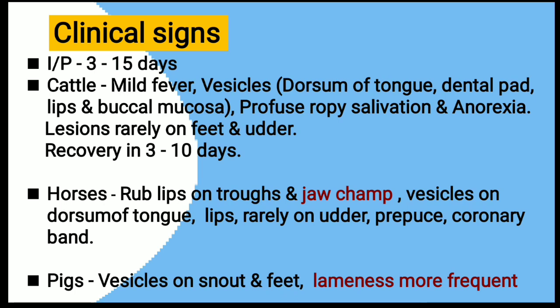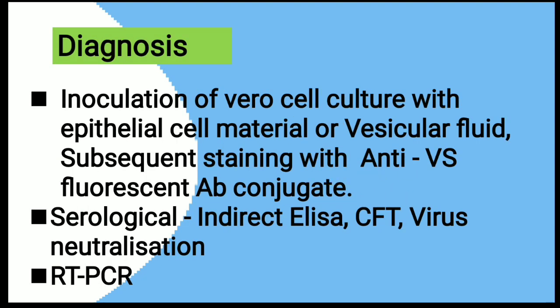In horses, they rub their lips on rough surfaces. Vesicles appear on the dorsum of tongue, lips, and rarely on udder, prepuce, and coronary bands. In pigs, vesicles occur on the snout and feet, and lameness is more frequent in pigs.